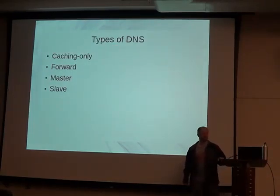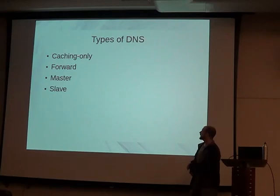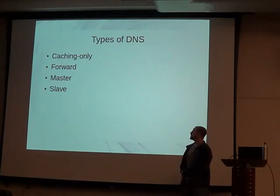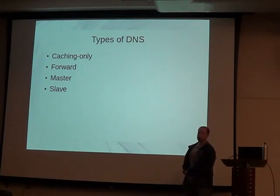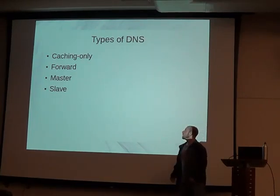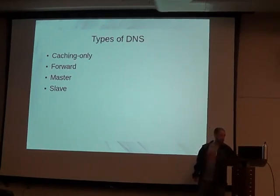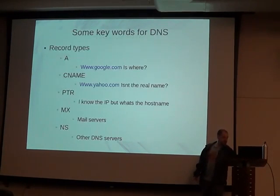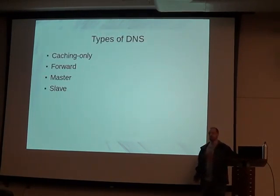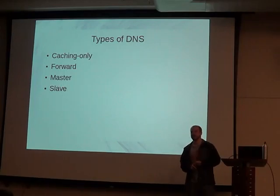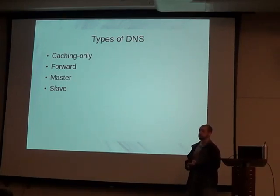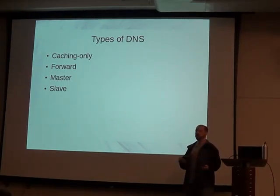What types of DNS servers do we have? We have a caching-only server, a forwarding server, a master, and a slave. The caching-only server is the easiest — when you install BIND, by default it's a caching-only server, so you don't have to do anything but install it and point systems to use it.